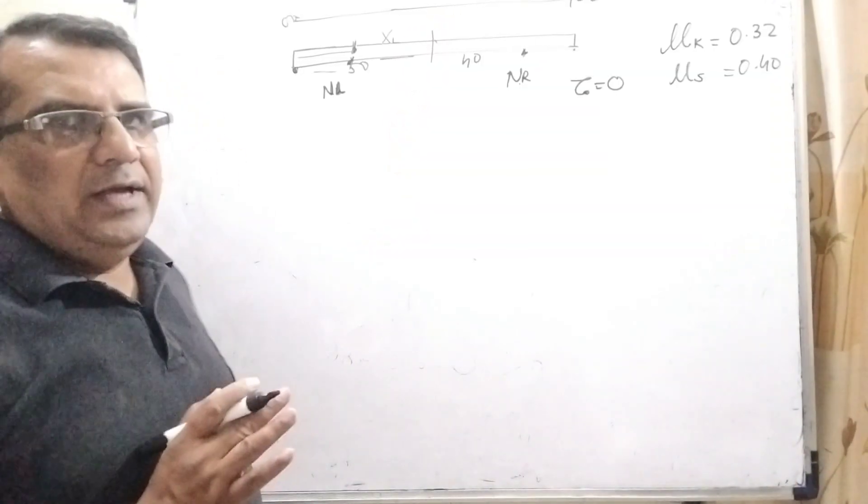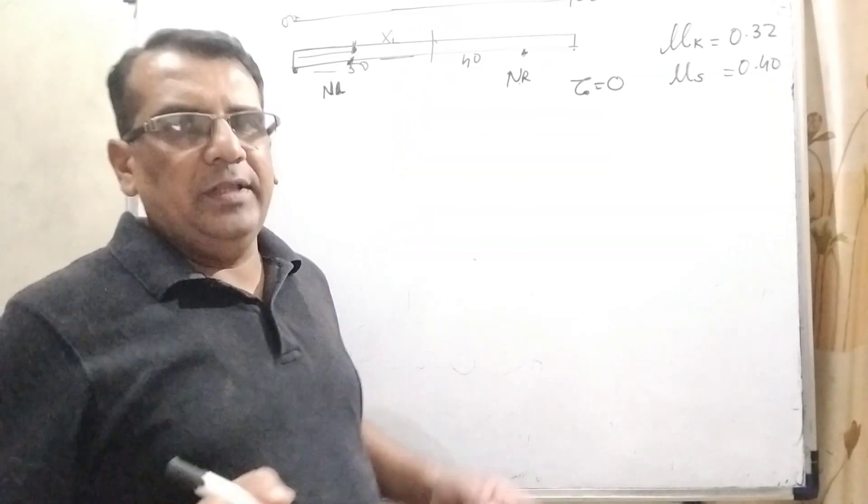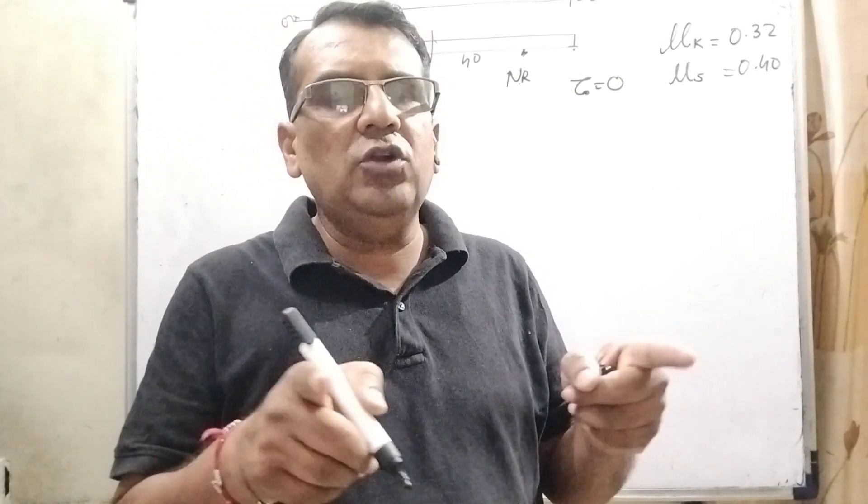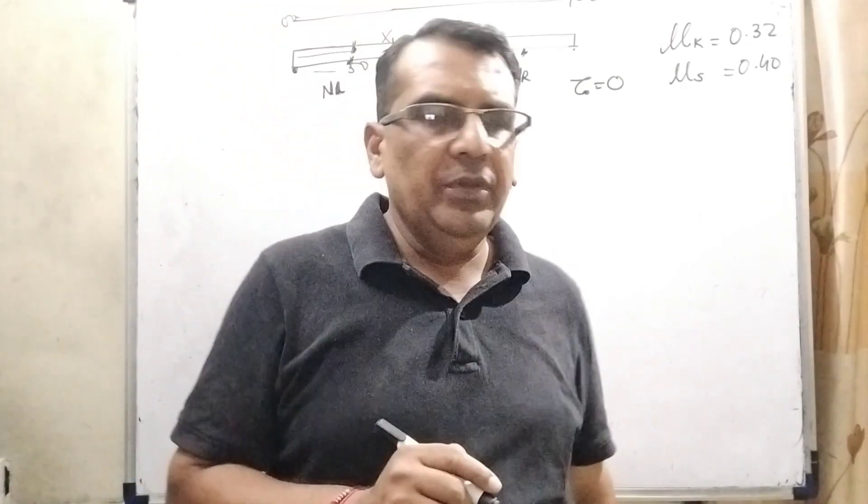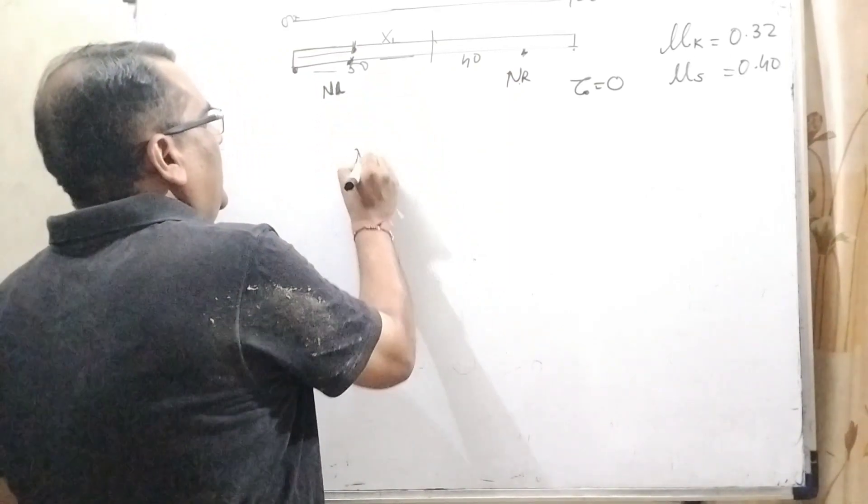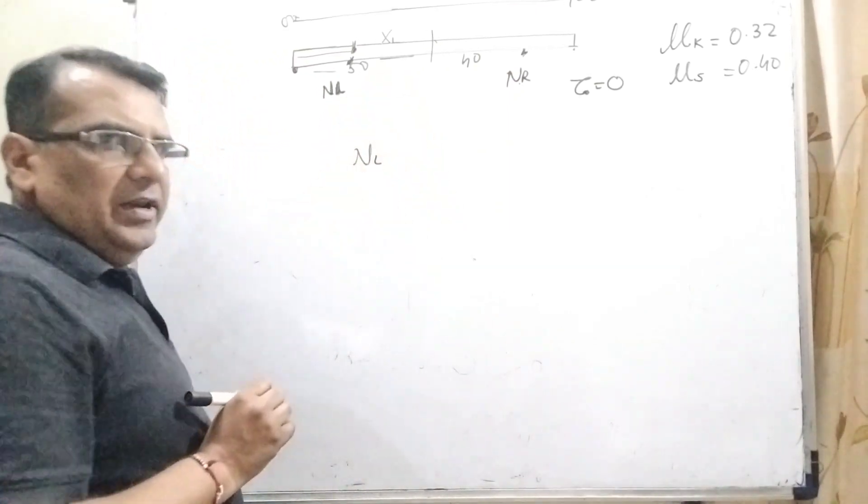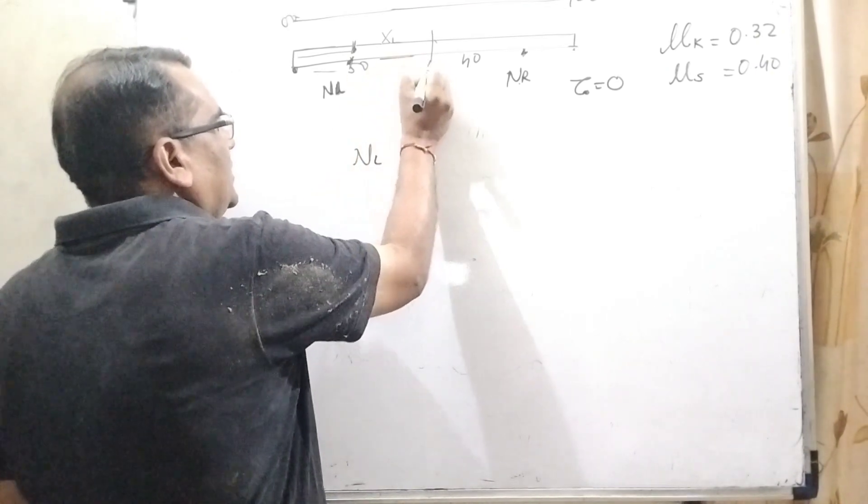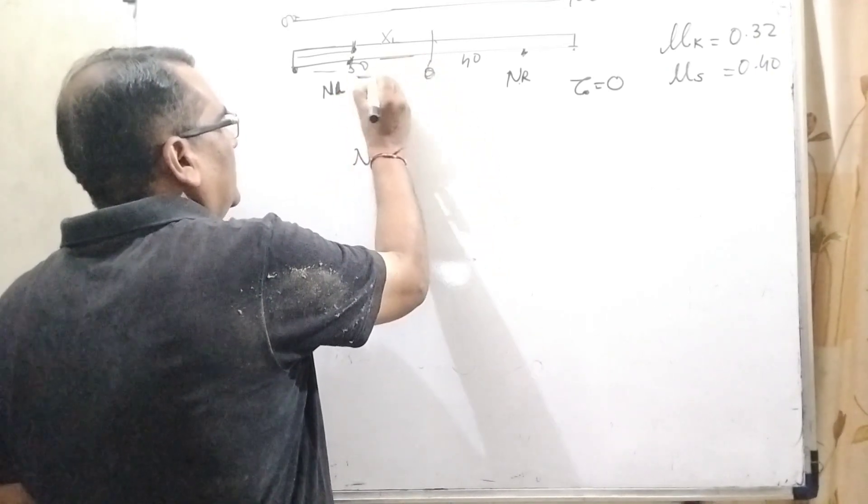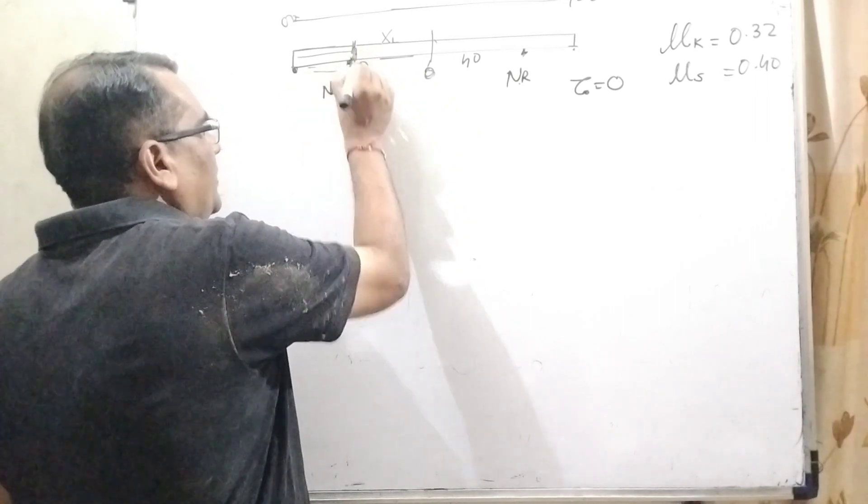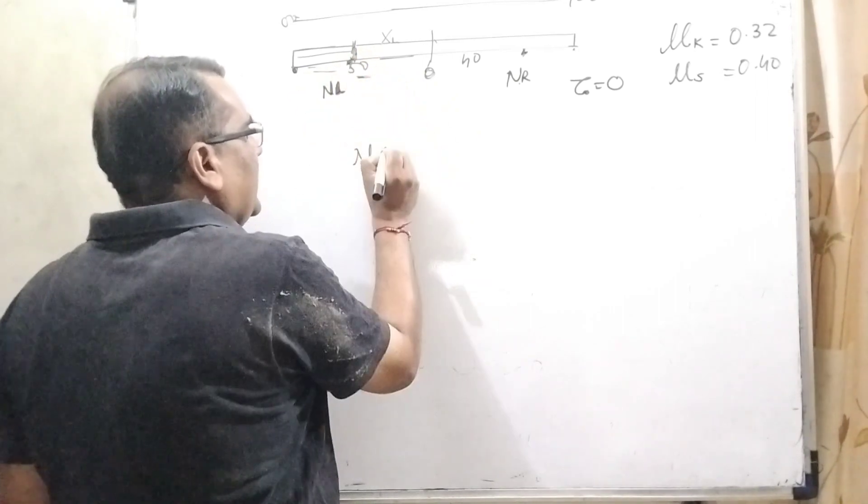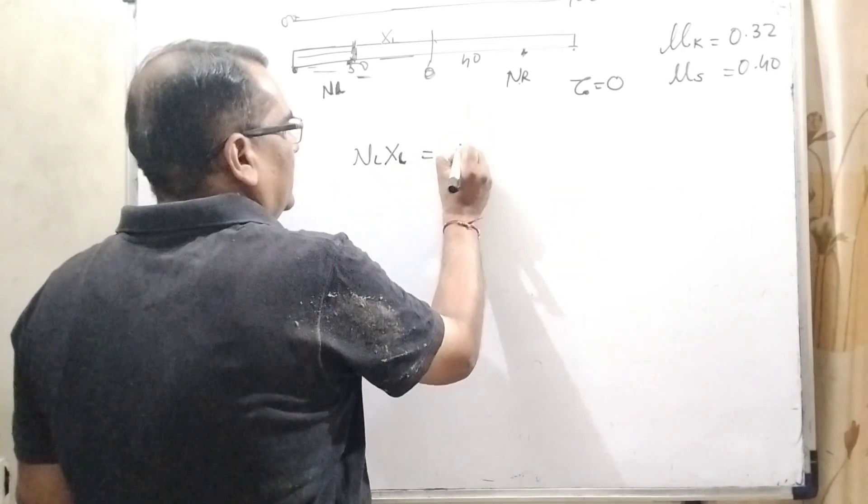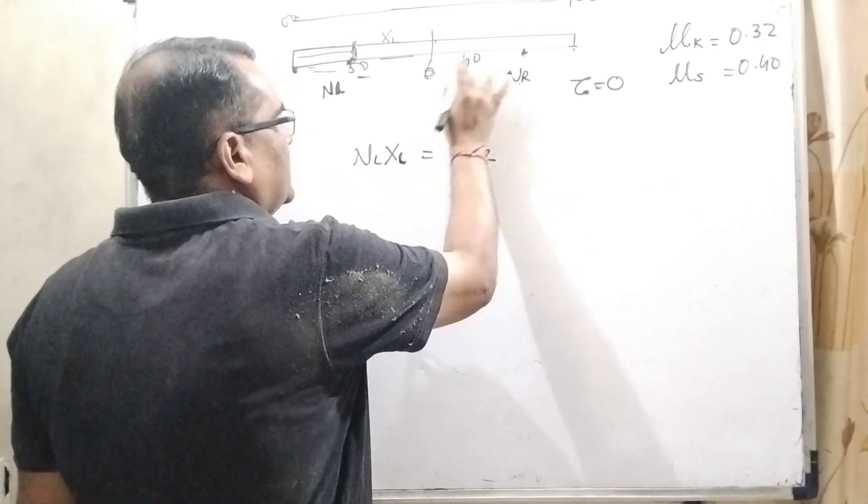Now as per the experiment, you are well known that only fingers are moving but the scale is not moving, it means torque is zero. So here NL is the normal force of the left-hand side and the distance from the center, let us consider this distance, and here it will be stopped. In that case, the distance is XL. Here NR and the distance is 40.